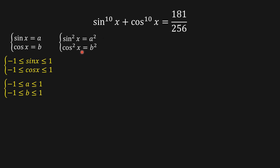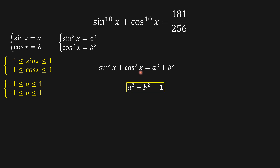Squaring both sides and adding side by side, we get sine squared plus cosine squared equals a squared plus b squared. We know that sine squared x plus cosine squared x equals 1 for whatever angle we have, so a squared plus b squared equals 1.